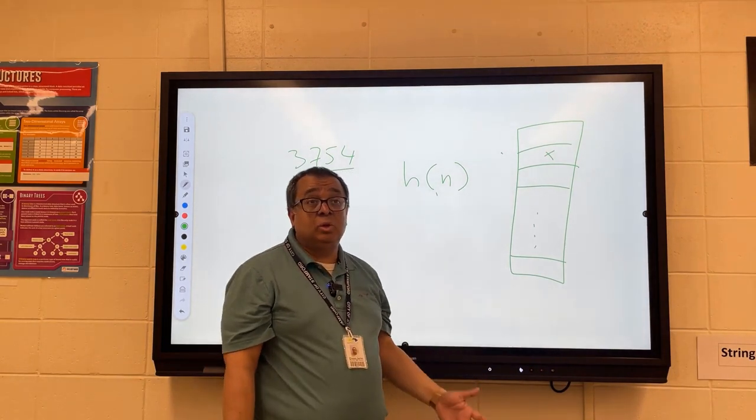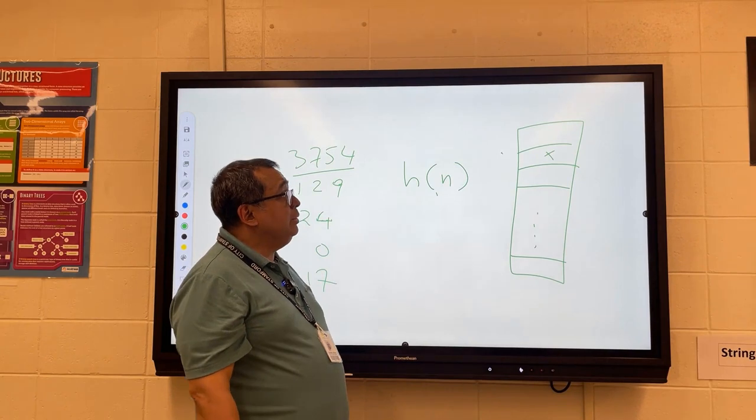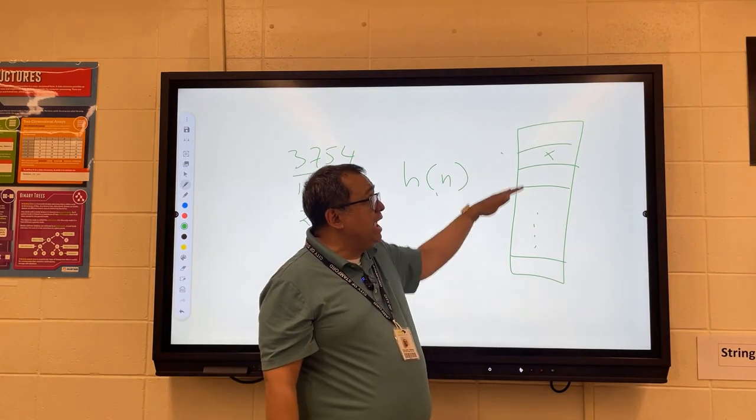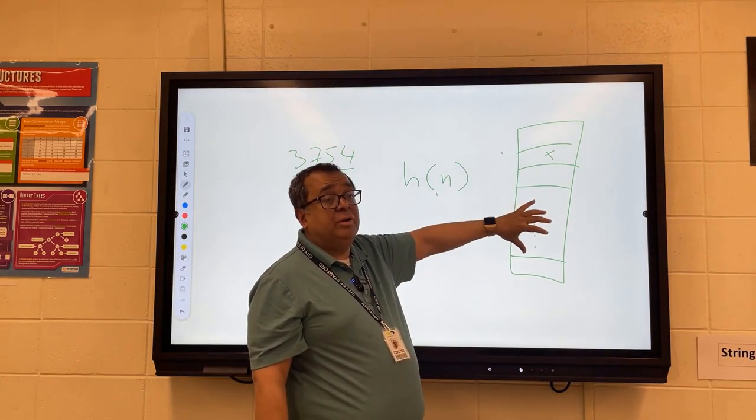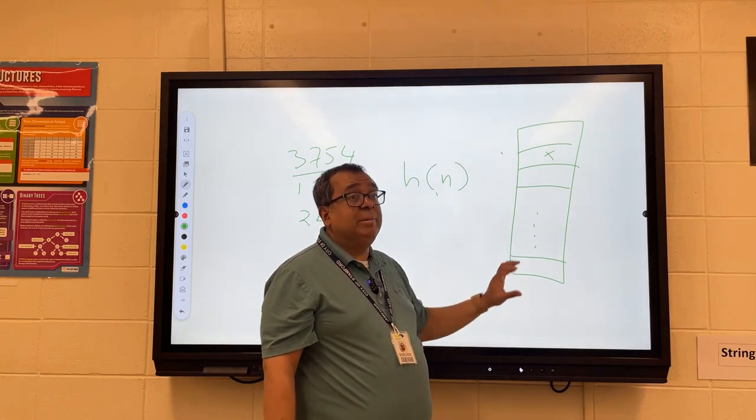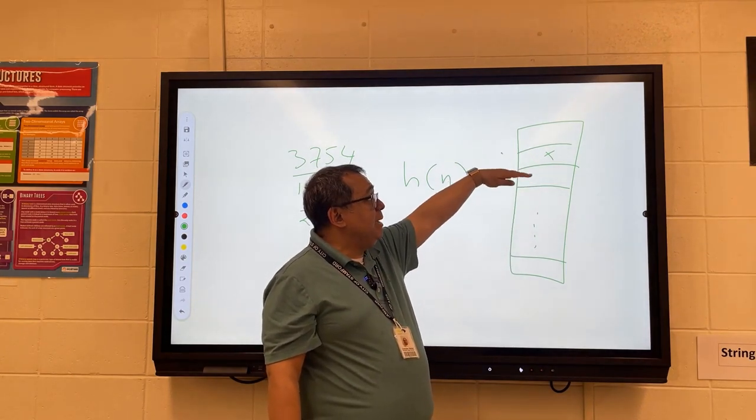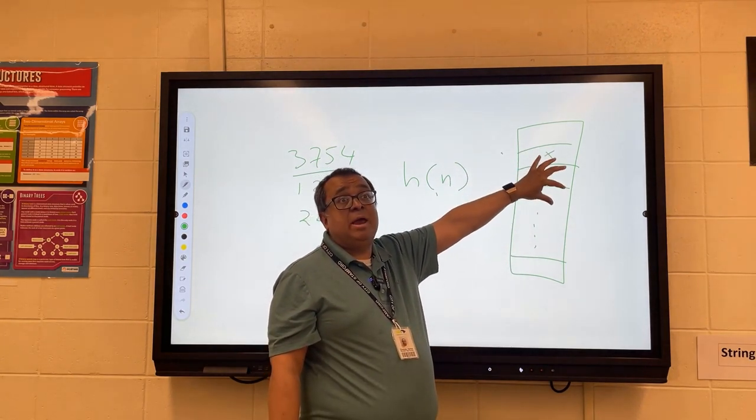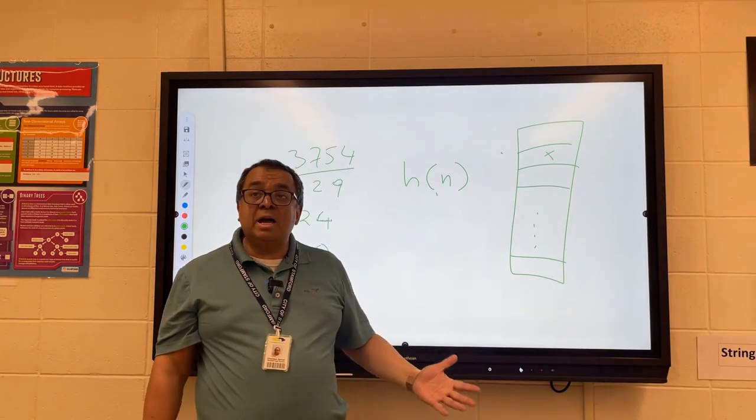So then we said an alternative would be something called quadratic probing, where we would attempt to move away from this using some other quadratic formula that would basically keep us from having everything clustered in the same area.